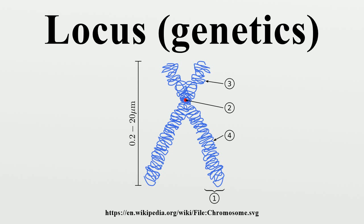Nomenclature: The chromosomal locus of a gene might be written 6p21.3, because 21 refers to region 2, band 1. This is read as 2-1, not as 21. So the entire locus is 6p21.3.